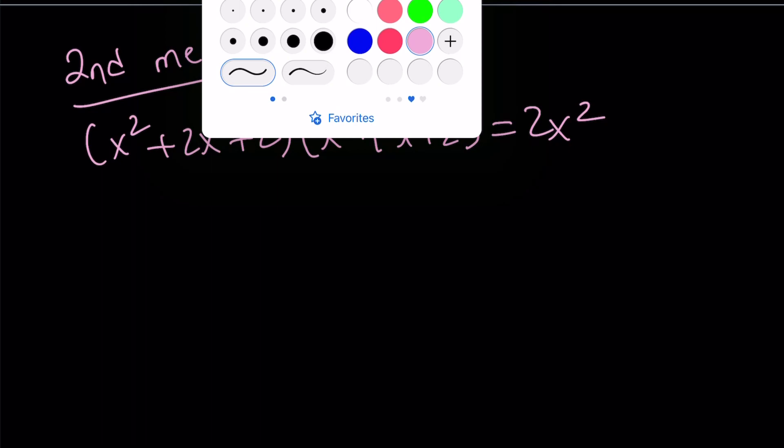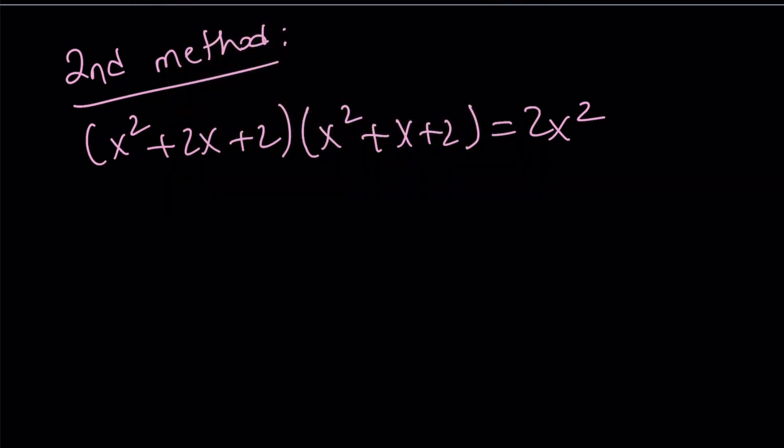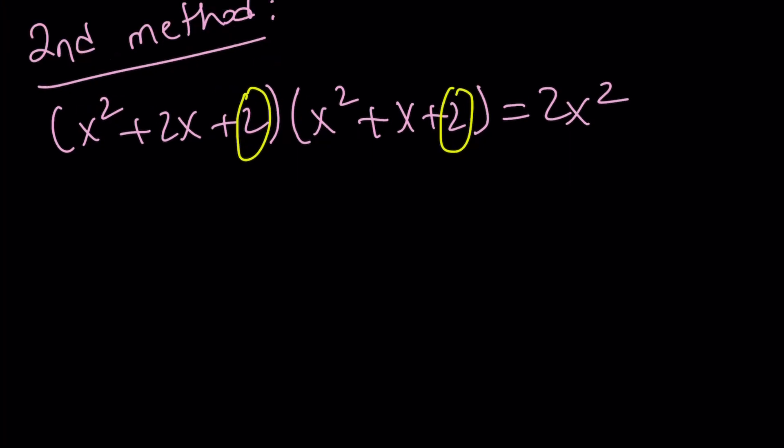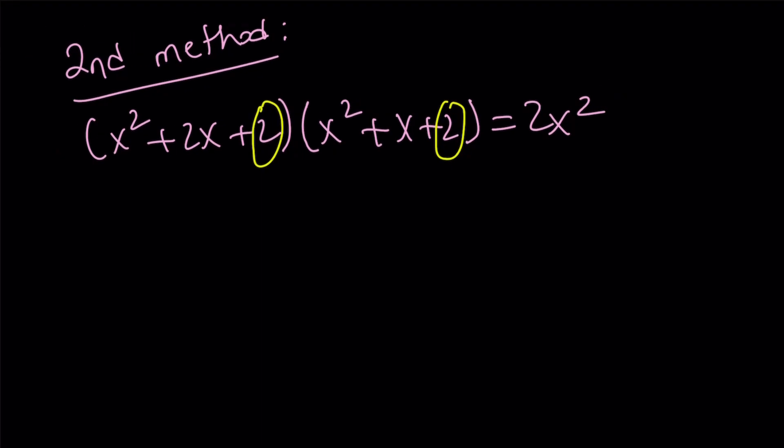Now, one thing that I want you to notice, obviously, for these kinds of equations, because we can typify them, which means there are a certain type, and these constants are the same. Awesome. And not only that, you have a product of two quadratics that have the same constant, but also you have x squared on the right-hand side, which is kind of nice. Now, this allows us to manipulate the equation in the following way.